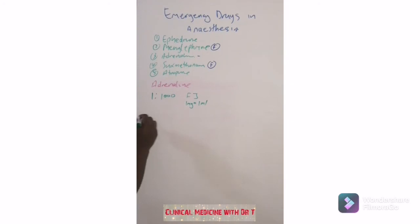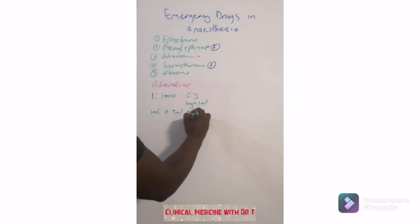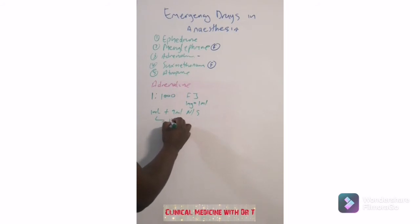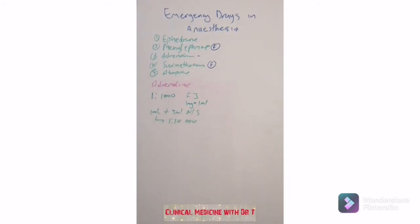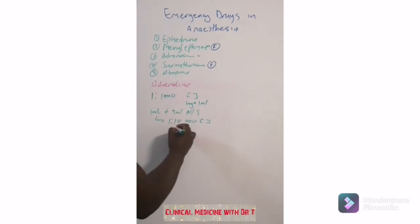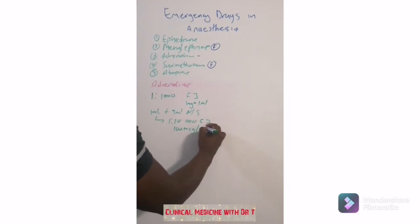What you do — you take a 10 mL syringe, draw this 1 mL, and add that 1 mL to 9 mLs of normal saline. So what you're going to get is a concentration of 1:10,000, and this is 100 micrograms per mL.